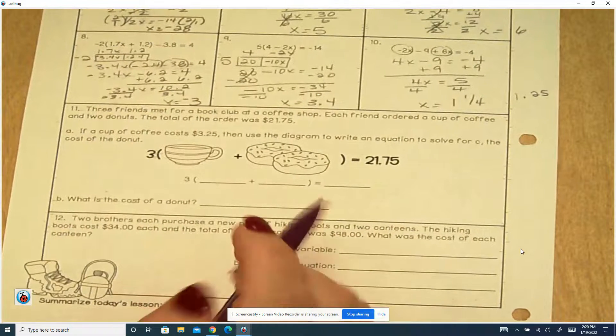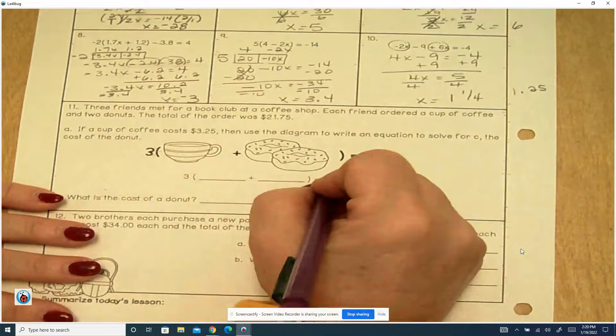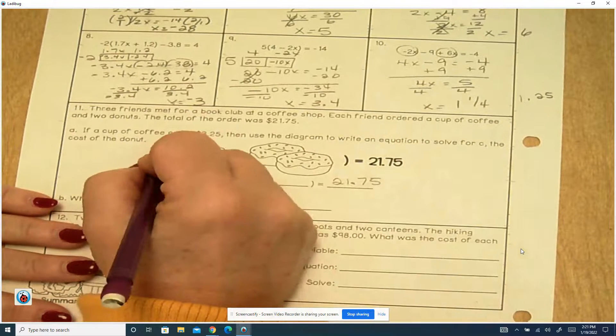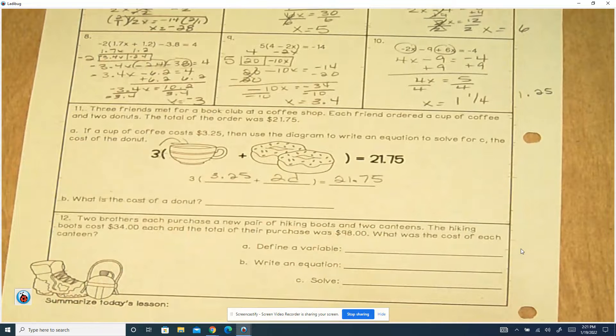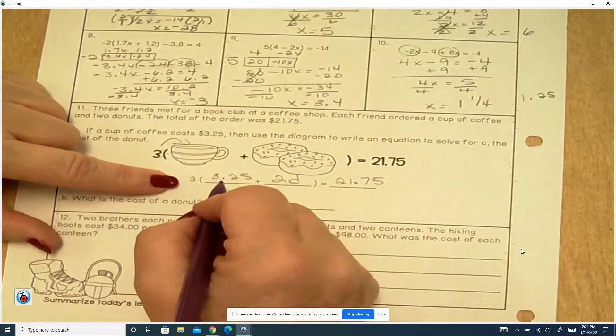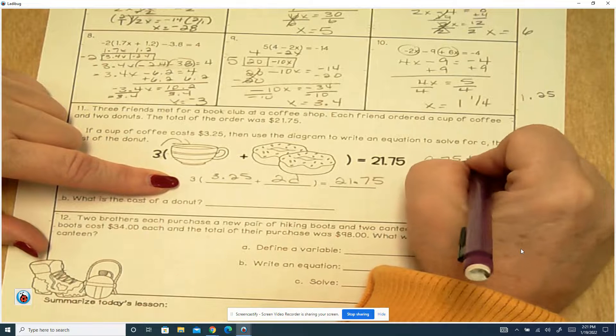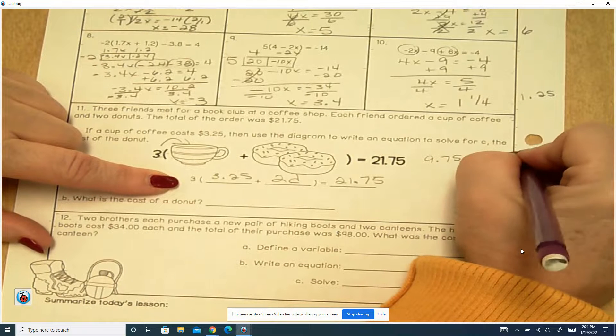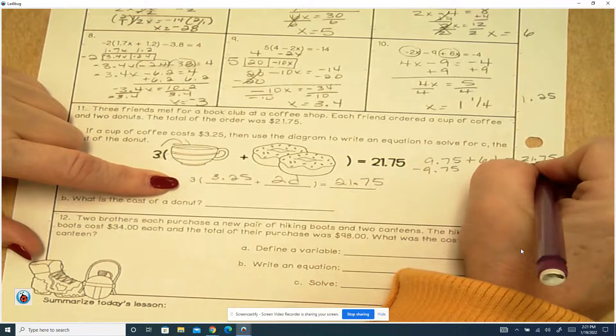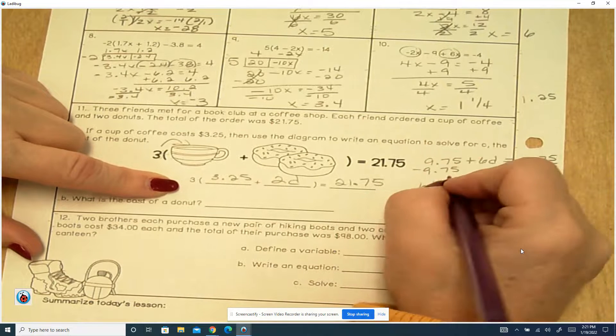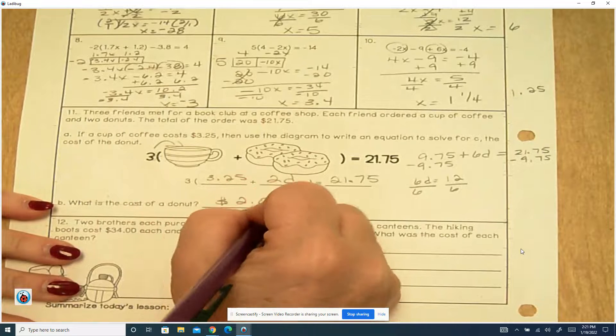Three friends met for a book club at a coffee shop. Each friend orders a cup of coffee and two donuts. The total order was $21.75. Three cups of coffee. Each cup of coffee was $3.25. And then they ordered two donuts a piece. So if we multiply this out, three times 3.25 is 9.75 plus three times two is six. So six donuts and that equals $21.75 minus the $9.75. That's going to give us six donuts is equal to 12 divided by six on both sides. The donuts cost $2.75.